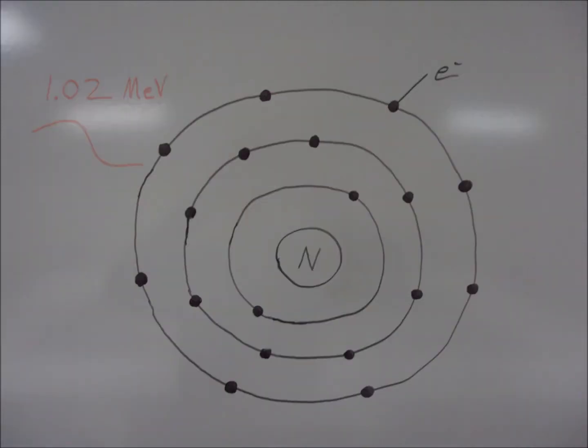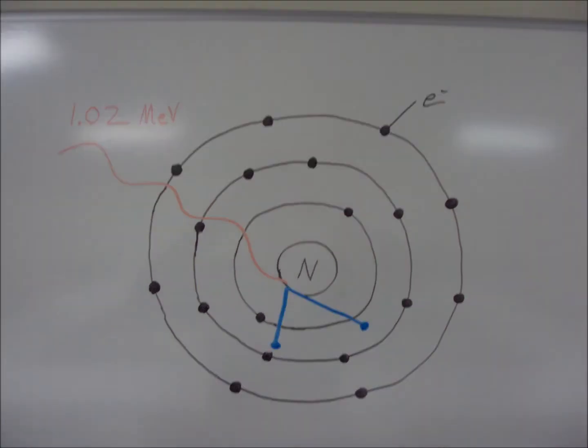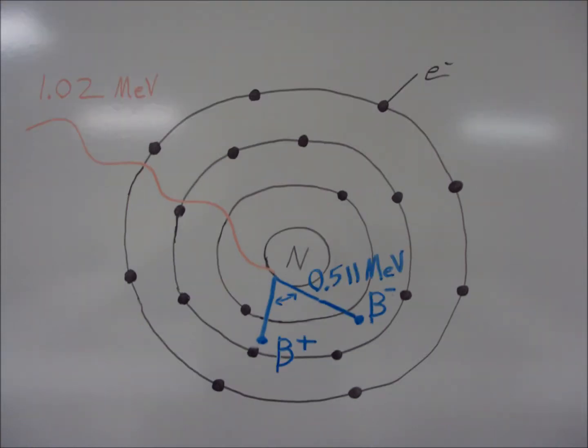So looking back we can see how pair production is created by a single high energy photon interacting with the nucleus of an atom, creating a beta positive, or a positron, and a beta negative, negatron, both of which are forms of anti-matter, which annihilate their matter siblings.